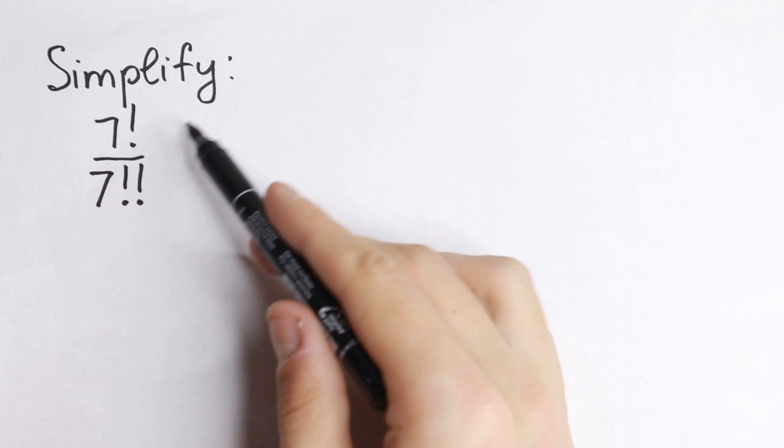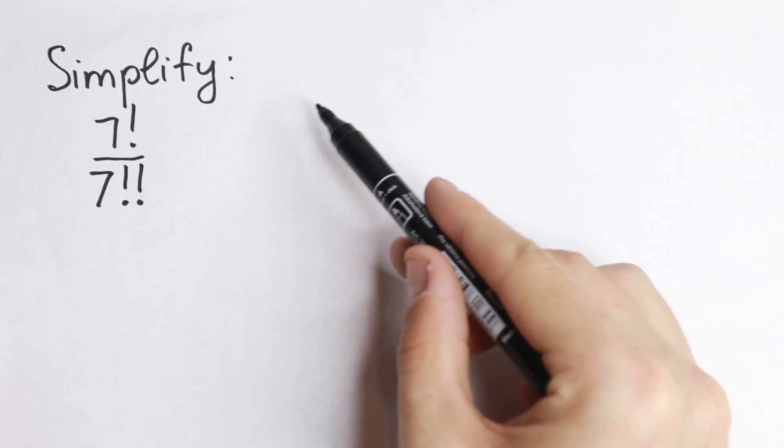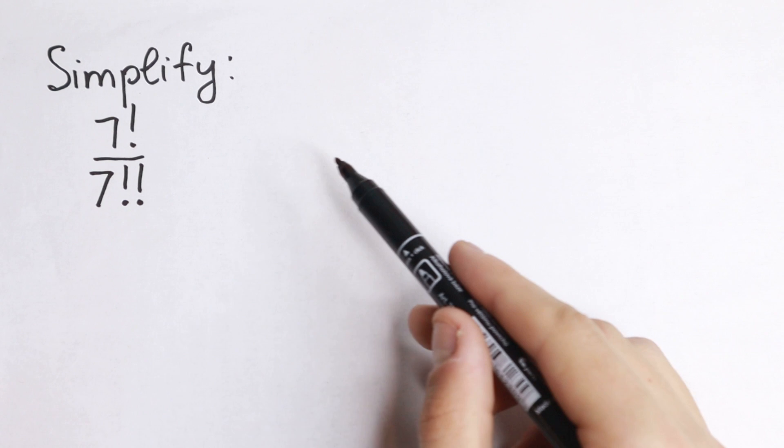On the numerator we have 7 factorial. We all know how to find it: 1 times 2 times 3 times 4 times 5 times 6 times 7. We multiply all of these numbers.